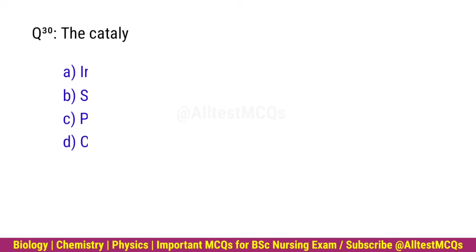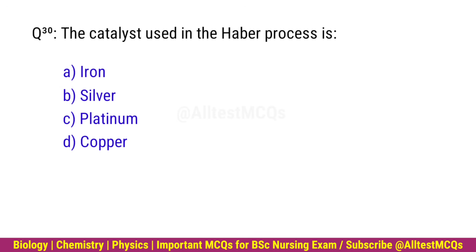Q30. The catalyst used in the Haber process is? Correct option is A. Iron.